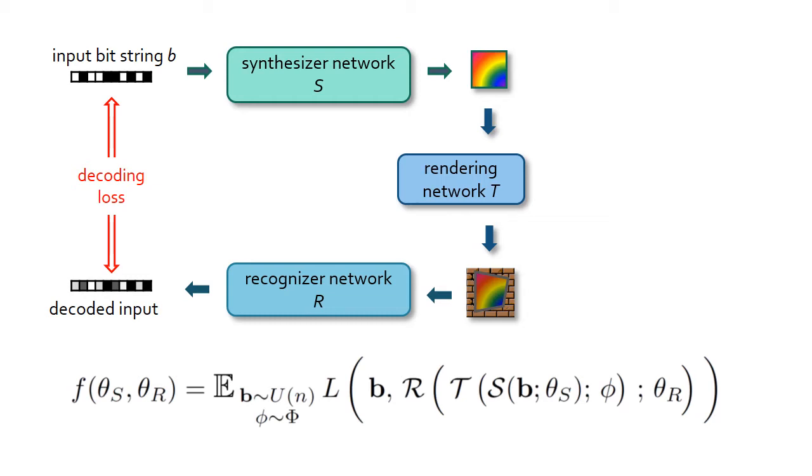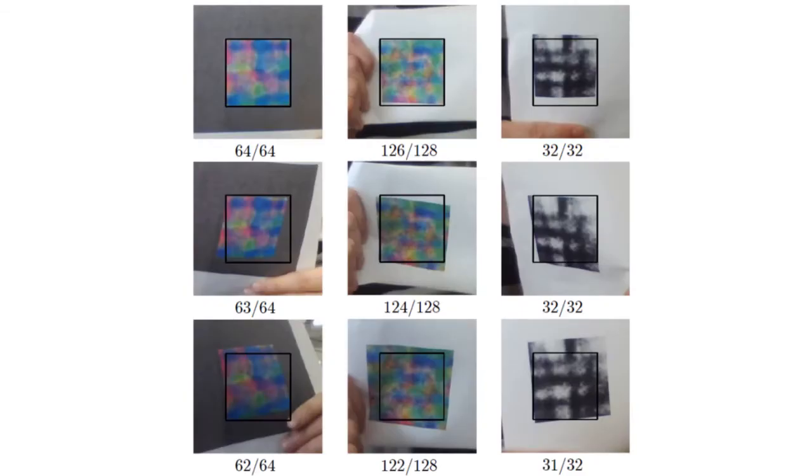For each batch, we sample bit strings and rendering network parameters randomly. As a result, the recognizer network is tuned to the synthesized visual markers, and the synthesized visual markers are tuned for the recognizer network.